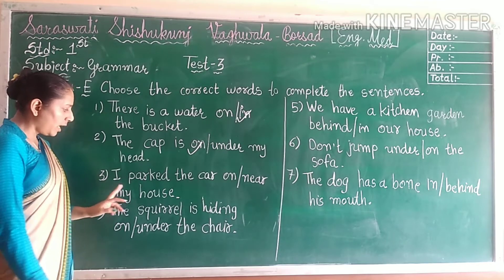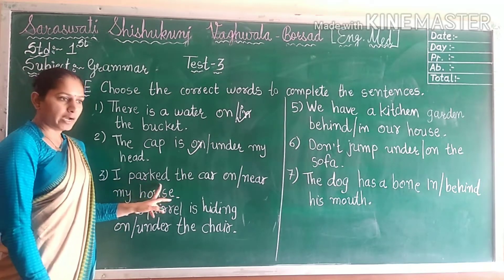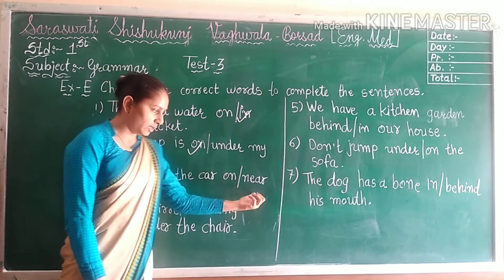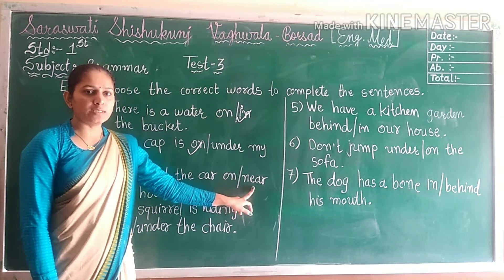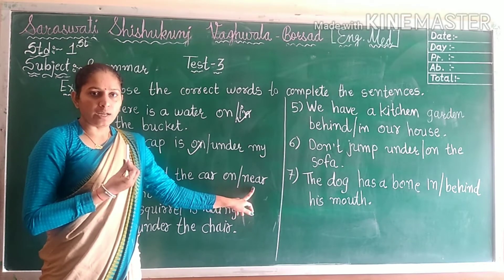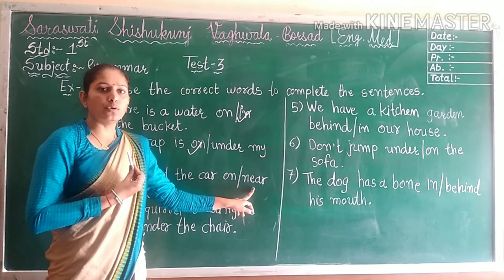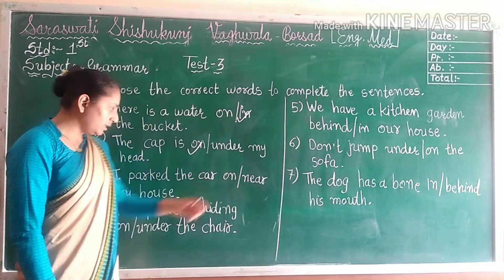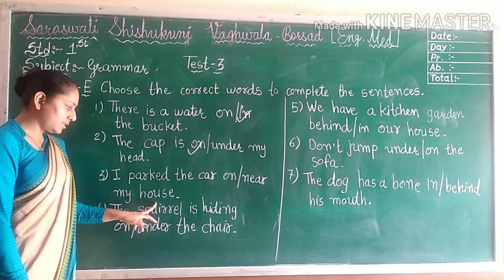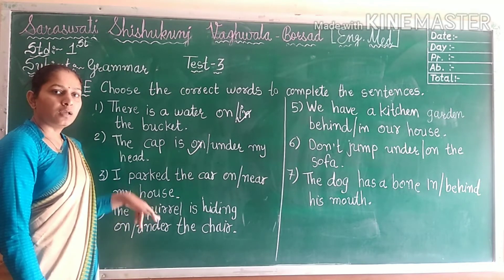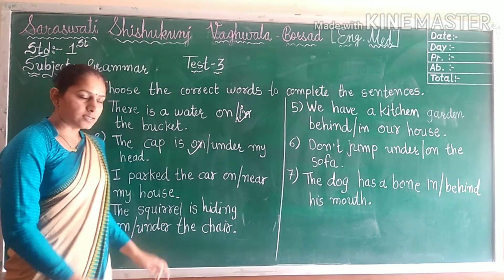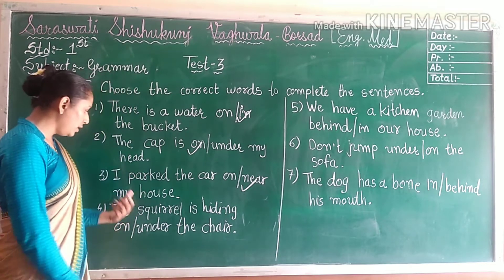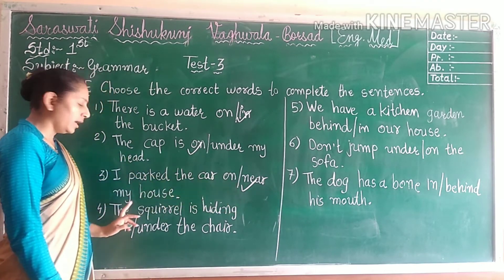Third number. I park the car — blank — my house. Two options: ON or NEAR. NEAR means something close by — for example, the job is near to me. So where do we park the car? On the house or near the house? Near. So our answer is: I park the car near my house.